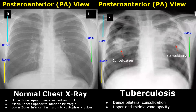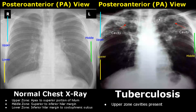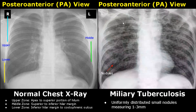Consolidation refers to filling of air spaces with fluid, blood, pus, or some tissue or mass, and it will appear bright. Bilateral consolidation is another feature in tuberculosis, involving the upper and middle zones. Cavities can be seen in both upper zones of the lungs. In miliary tuberculosis, numerous small nodules are uniformly distributed throughout both lungs, measuring between 1 to 3 mm in diameter.